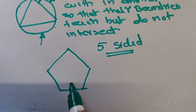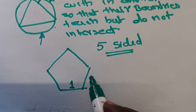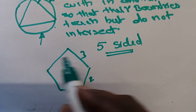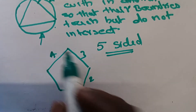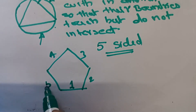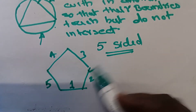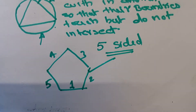We can number the sides as 1, 2, 3, 4, 5. So we can say that this is a pentagon.